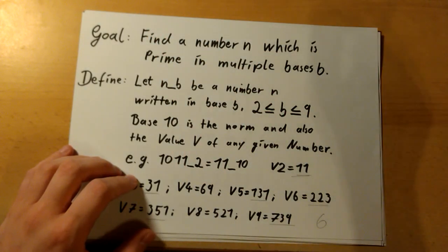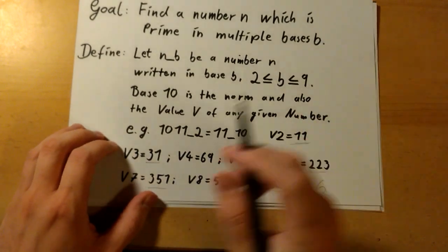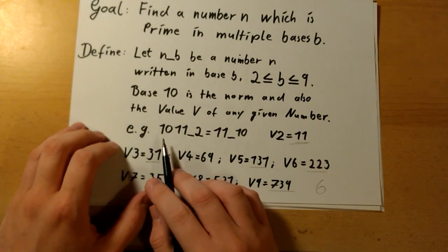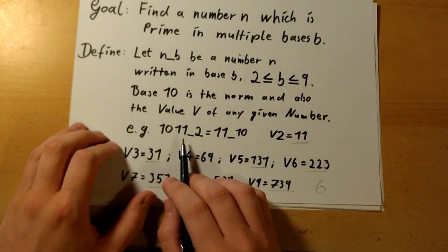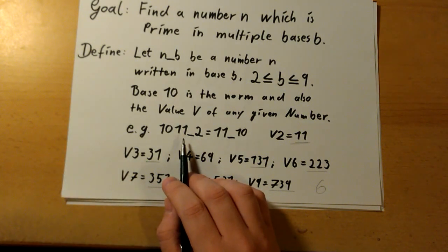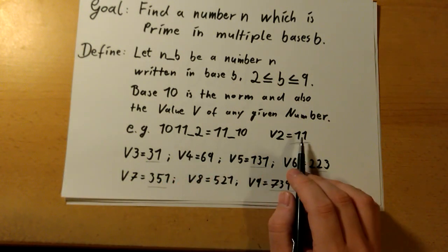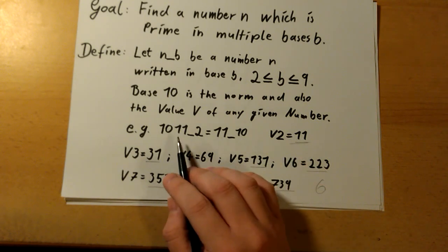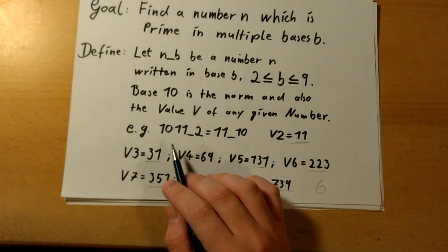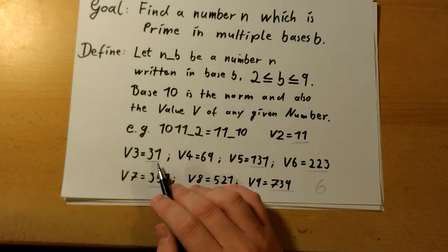For example, we take a look at the number 1011. If you look at this number as a base 2 number, its value is 11, which is prime. If this were to be a base 3 number, its value were 31, which is prime.